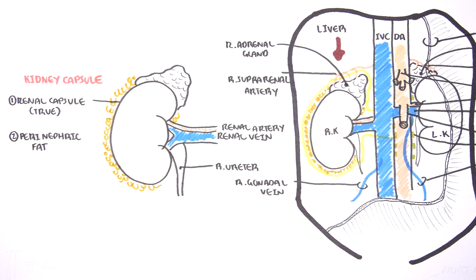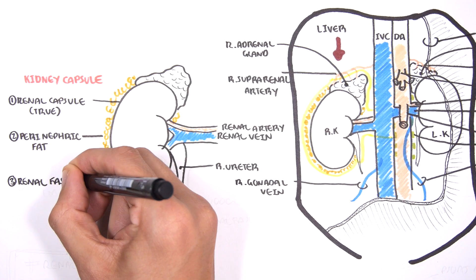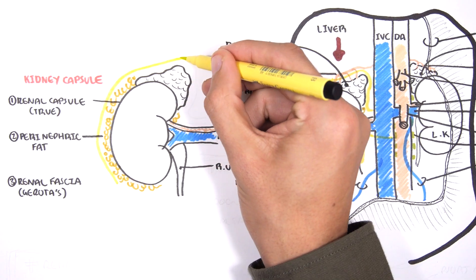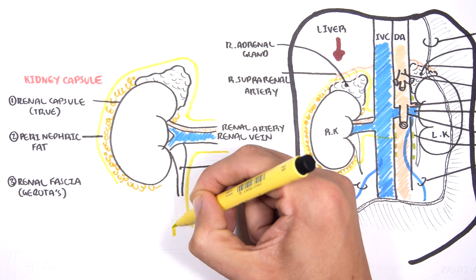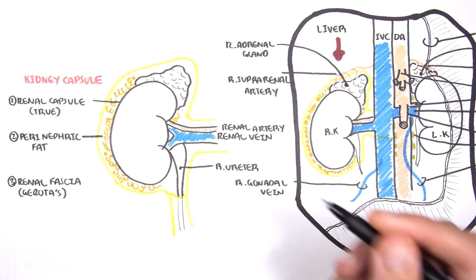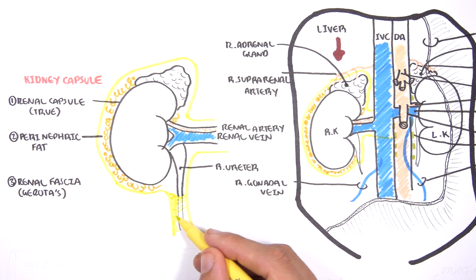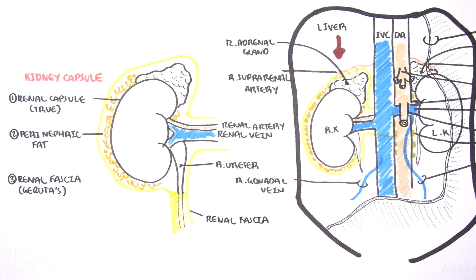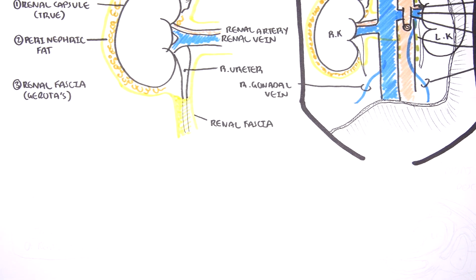After this is the renal fascia which is also known as Gerota's fascia. This fascia is important because it extends medially and surrounds the large vessels, the inferior vena cava and the descending aorta. But also the renal fascia extends down and wraps around the ureter and goes down towards the pelvis. This has some clinical relevance.